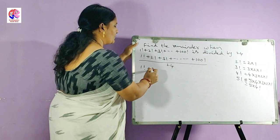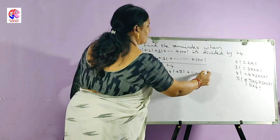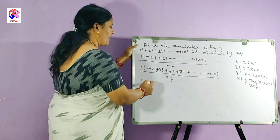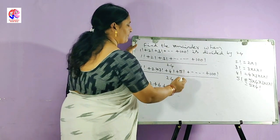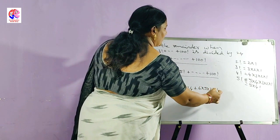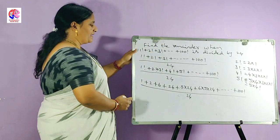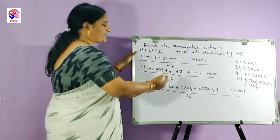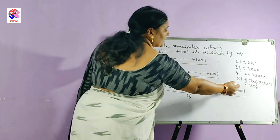So, 1 factorial plus 2 factorial plus 3 factorial plus 4 factorial plus 5 factorial plus so on plus 100 factorial divided by 24. We expand: 1 factorial is 1, plus 2 factorial is 2, plus 3 factorial is 6, plus 4 factorial is 24, plus 5 factorial is 5 into 24, plus 6 factorial is 6 into 5 into 24, plus so on, plus 100 factorial.